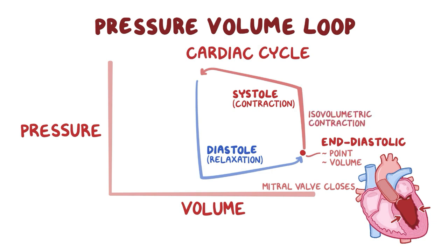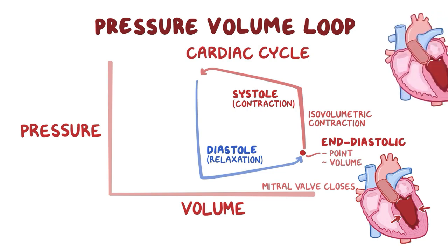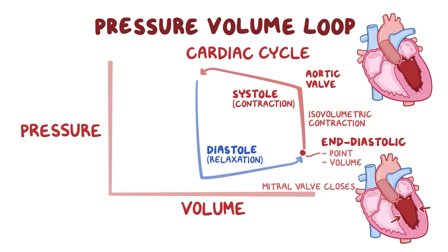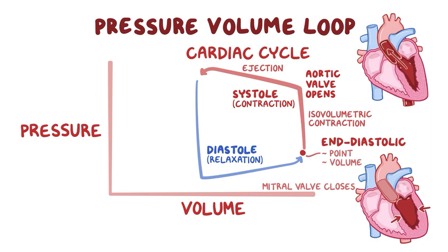This phase is isovolumetric contraction, but it doesn't last long, because eventually the pressure inside the left ventricle exceeds aortic pressure, making the aortic valve pop open, and that starts the ejection phase. During the ejection phase, blood from the left ventricle goes into the aorta, decreasing left ventricle volume. The left ventricle continues to contract, so ventricle pressure rises further, but then falls slightly.